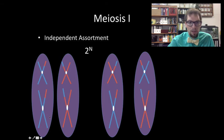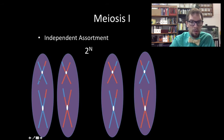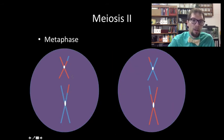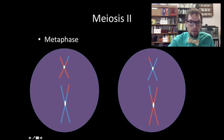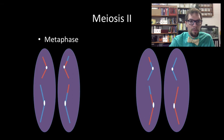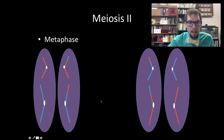After meiosis I, the cells have the homologous pairs separated into different cells, but the sister chromatids are still attached. In the second phase of meiosis, the sister chromatids separate — this looks a lot more like mitosis, with chromosomes aligning in the middle of the cell and then pulling to each side. Since two cells were produced from meiosis I, meiosis II produces four total cells.